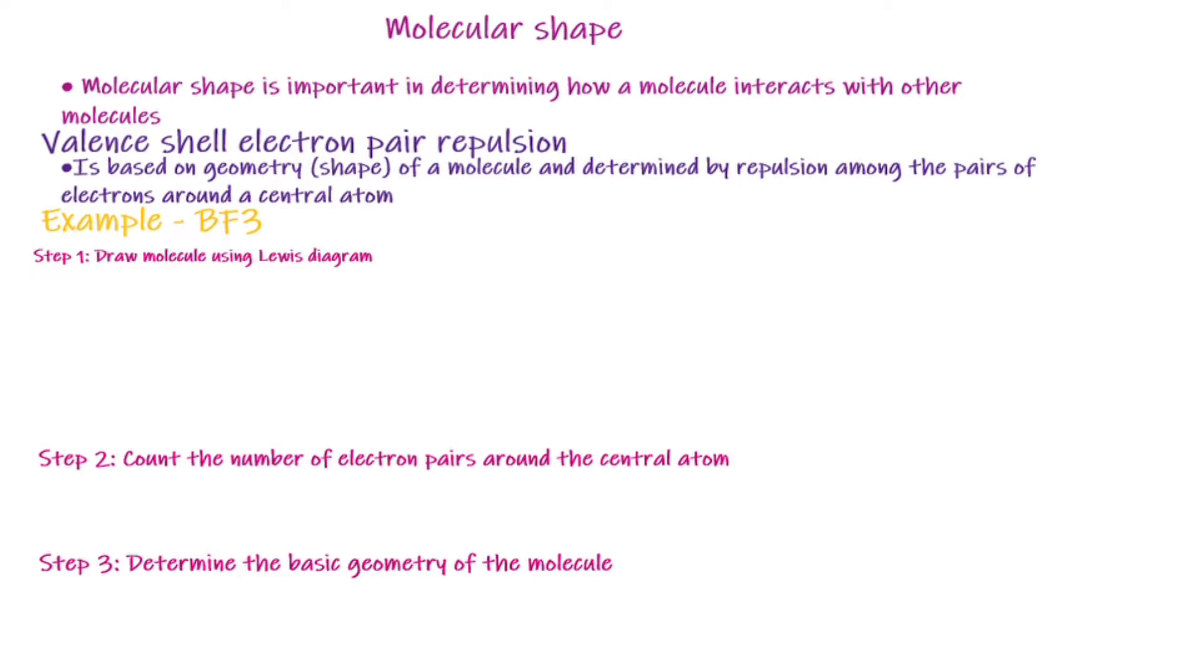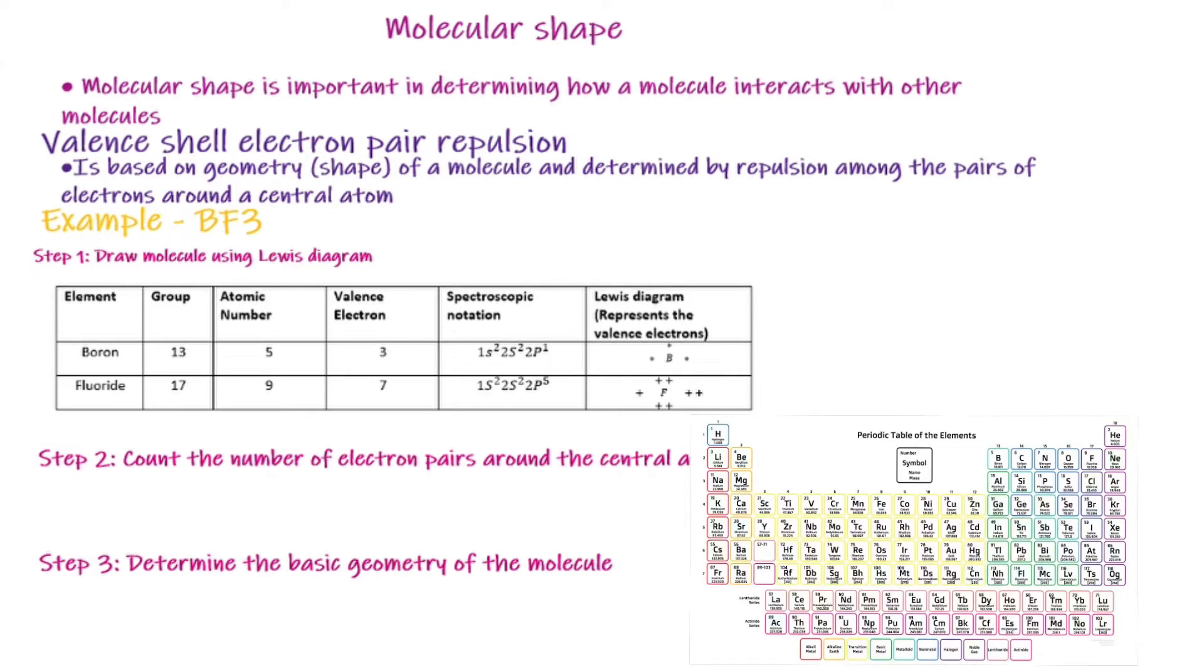We are looking at boron trifluoride. The first step is to draw the molecule using the Lewis diagram structure. If you open the periodic table and locate boron, you'll notice that boron is in group 13. It has an atomic number of 5. If we use the aufbau diagram to draw the electronic configuration, we'll determine it to be 1s², 2s², 2p¹. Hence, we can say that the valence electrons are 3.